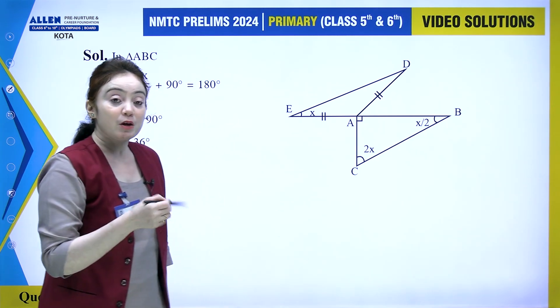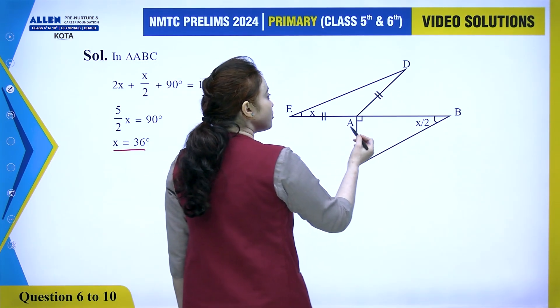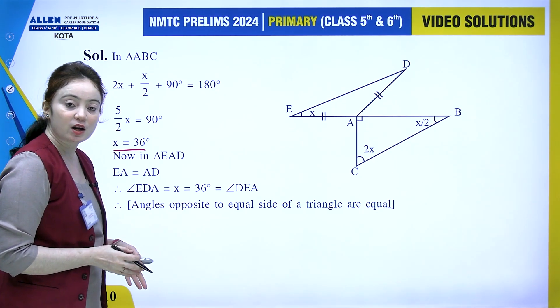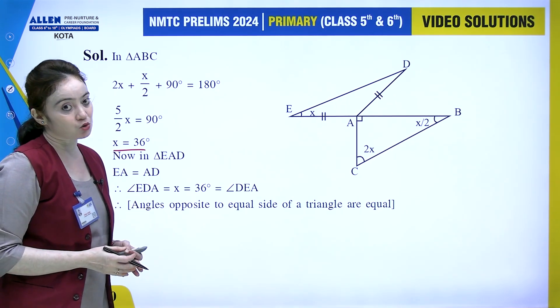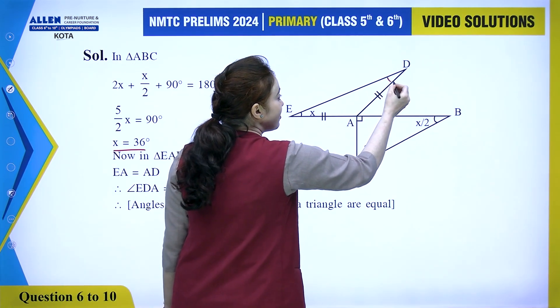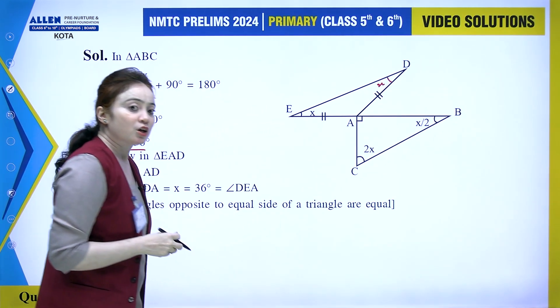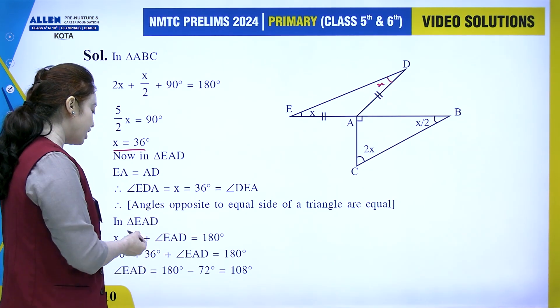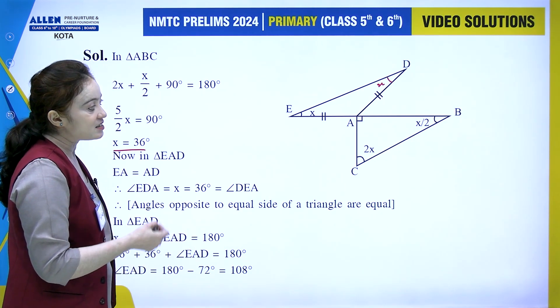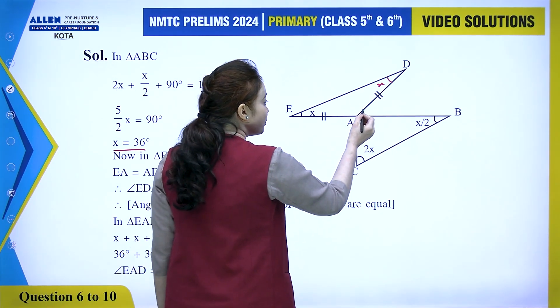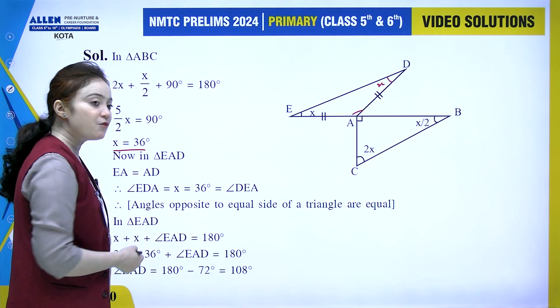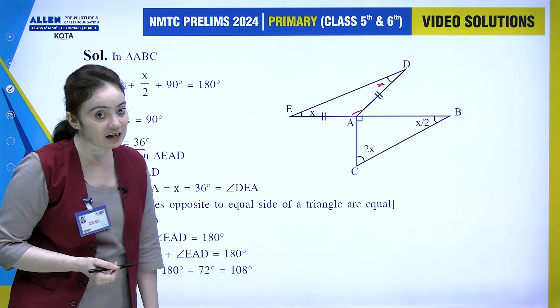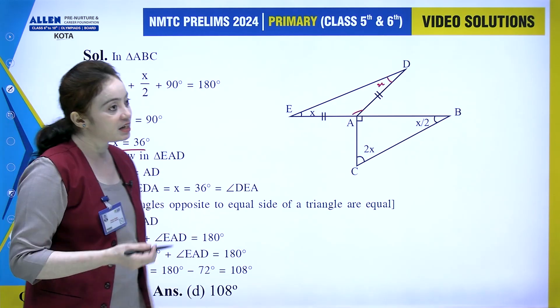Now we know x equals 36. We have information that EA equals AD. We know that if in a triangle two sides are equal, then the angles opposite to them are also equal. So if this angle is x, then that angle will also be x. In triangle EAD, applying angle sum property: x plus x plus angle EAD equals 180 degrees. We get angle EAD as 108 degrees, which is option D.